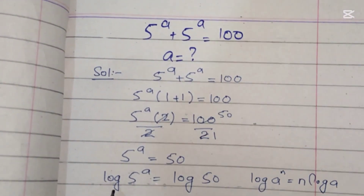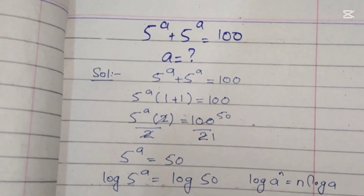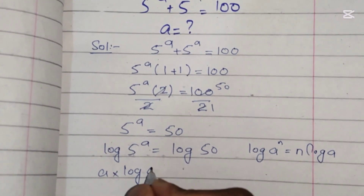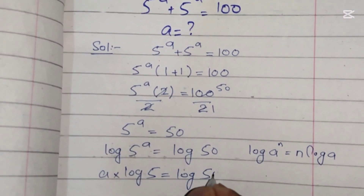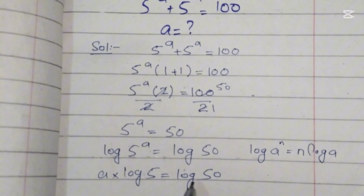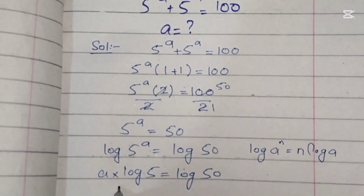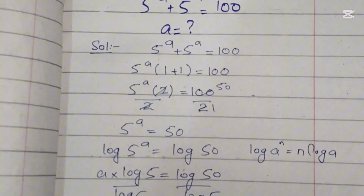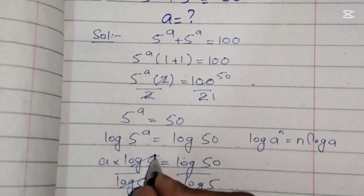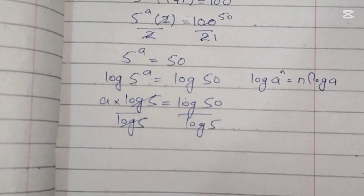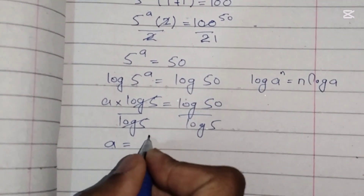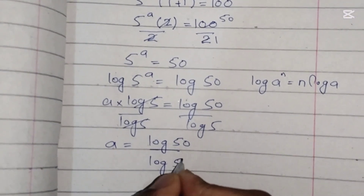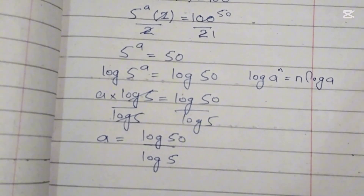On the left hand side we will use the formula: log of a power n equals n times log of a. This is the power rule of logarithm. So it becomes a times log of 5 equals log of 50. Now we will divide both sides by log of 5.